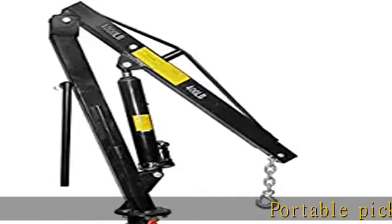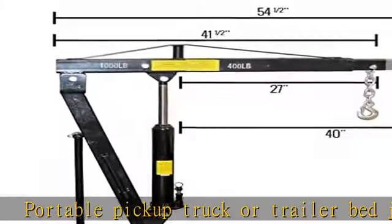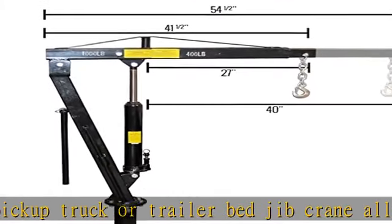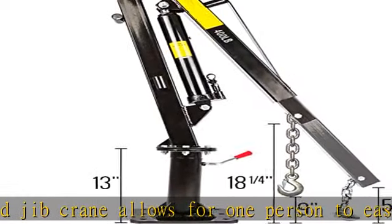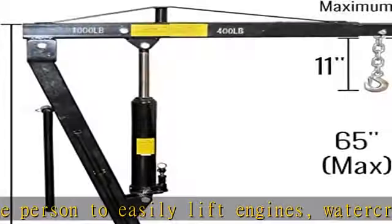Portable pickup truck or trailer bed jib crane allows for one person to easily lift engines, watercraft and more. Maximum 1,000 pounds capacity with boom contracted, and 400 pounds with boom extended.